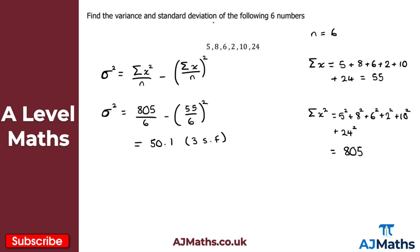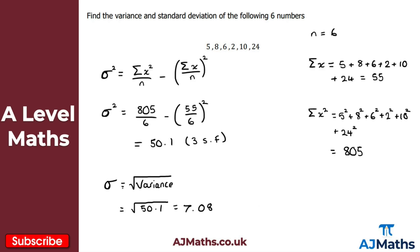We're not finished because we also need the standard deviation. The standard deviation σ is the square root of the variance, so that's the square root of 50.1. Taking this to a sensible degree of accuracy gives 7.08 to three significant figures. So the standard deviation is 7.08 and that's our solution.